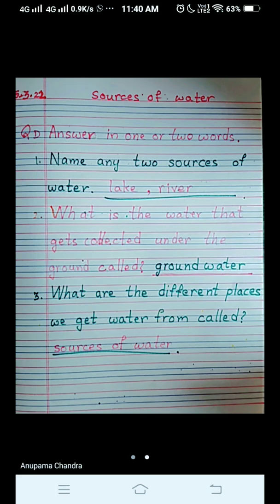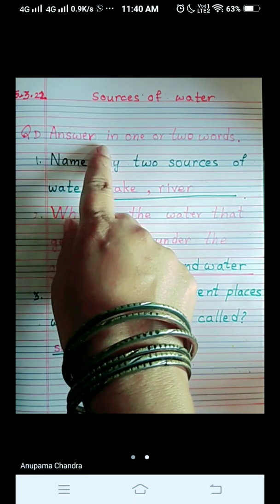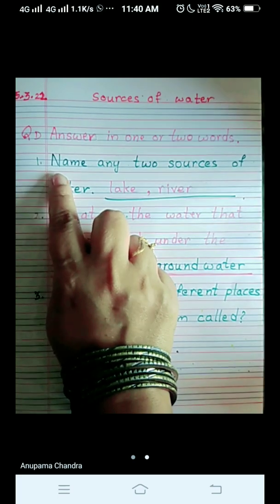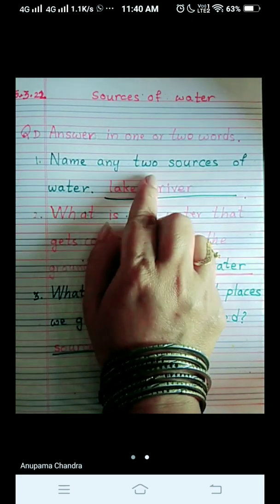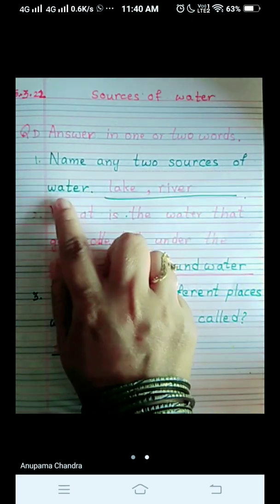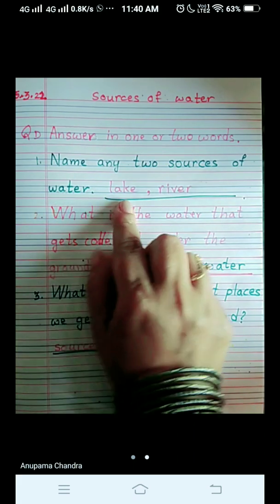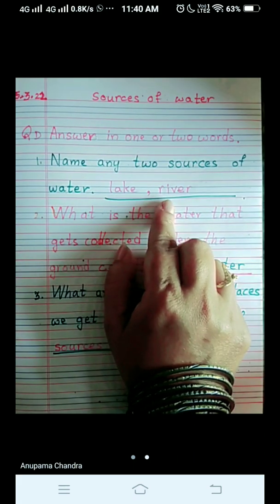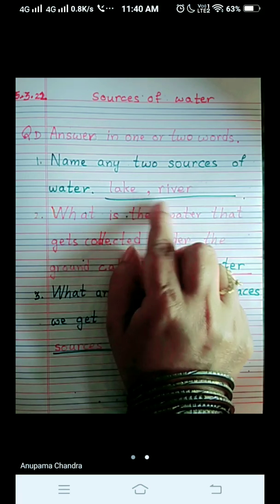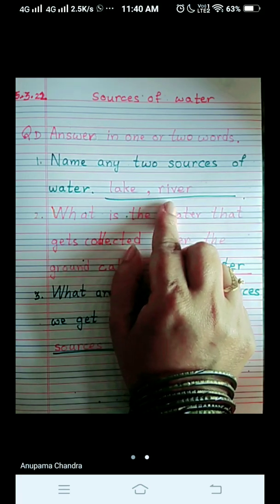Let's repeat it once. Answer in one or two words. Name any two sources of water. Lake, river. Check out the spelling. L-A-K-E lake, R-I-V-E-R river.